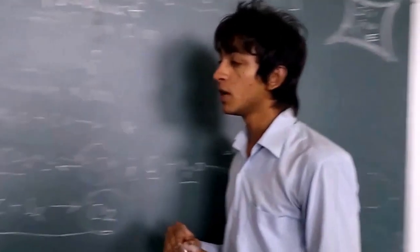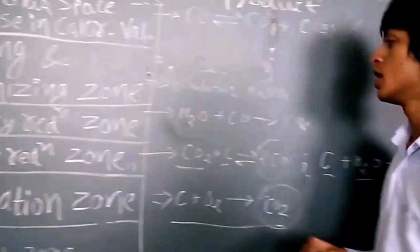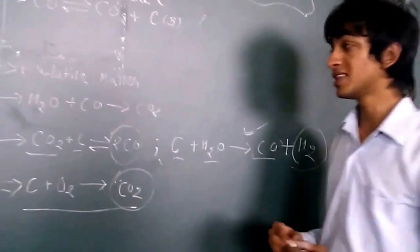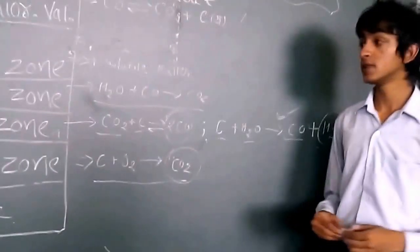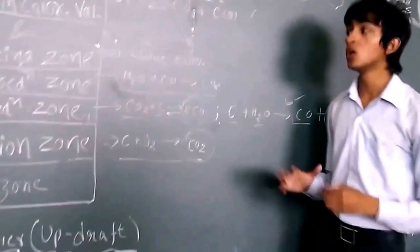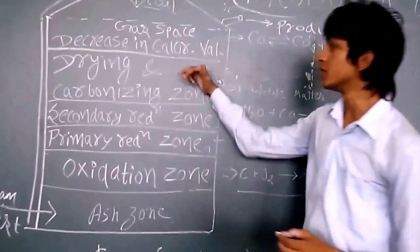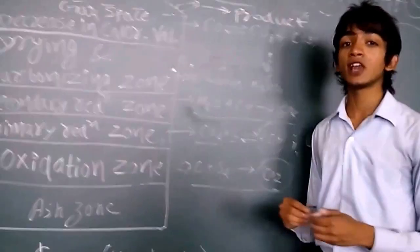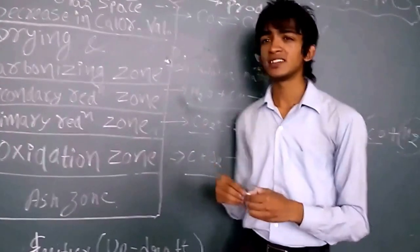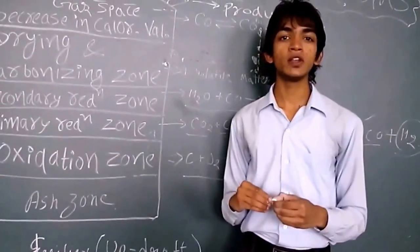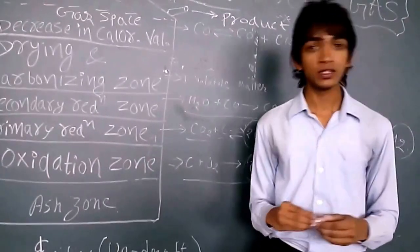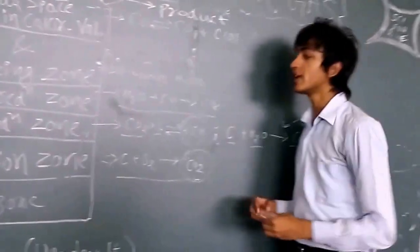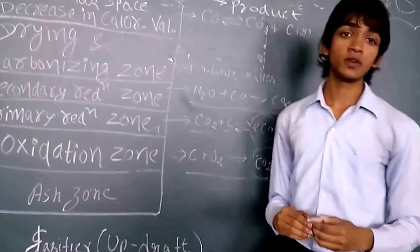Here, in the next zone, which is known as the secondary reduction zone, the excess steam can decrease the carbon monoxide content by this reaction. And now carbon monoxide comes here in the drying and carbonizing zone. Here, what we do is, to increase the calorific value, as I told earlier that producer gas has low calorific value, to increase its calorific value somewhat, we add some reactive hydrocarbon molecules to increase the calorific value.